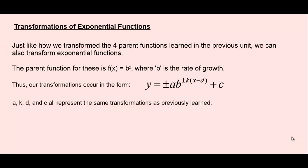Or maybe it's a rate of decay, depending on what the value for b is. We're still using some of the same variables we saw before when we're performing our transformations. We might have a values, k values, c values, and d values, and they all represent the same types of transformations that we had previously learned.